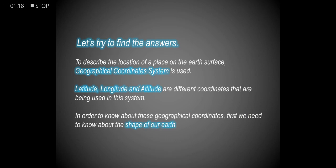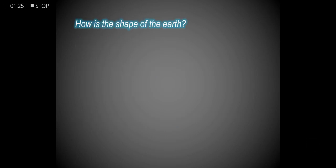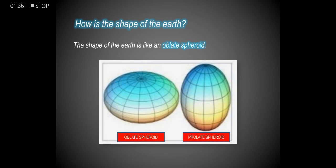In order to know about these geographical coordinates, we first need to know about the shape of our Earth. The shape of the Earth is like an oblate spheroid. Observe the difference between oblate and prolate spheroids in these figures. The shape of the Earth is like the first figure, which is an oblate spheroid.